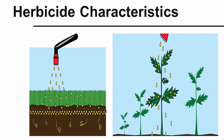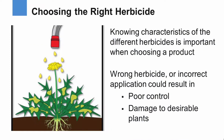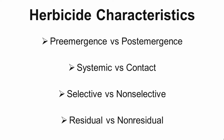Today we'll talk about the characteristics of various herbicides. It's really important to understand these characteristics when choosing a product. If you pick the wrong herbicide or make an incorrect application, you're going to result in poor control and perhaps even damage to your desirable plants. We've broken these into four groups: pre-emergence versus post-emergence, systemic versus contact, selective versus non-selective, and residual versus non-residual.